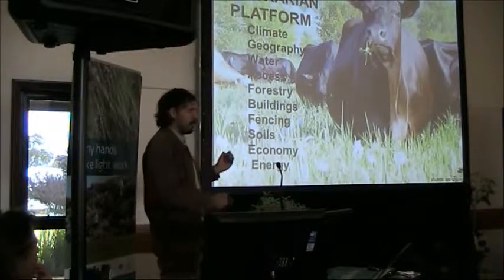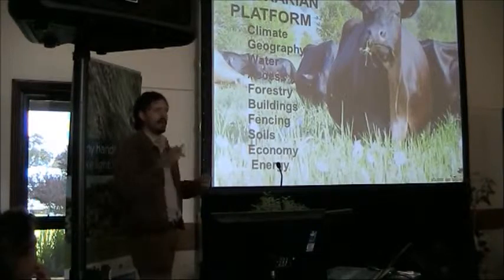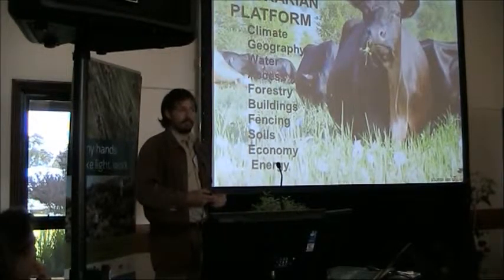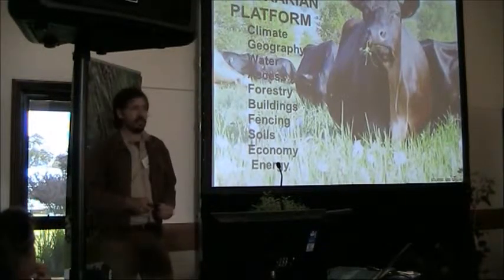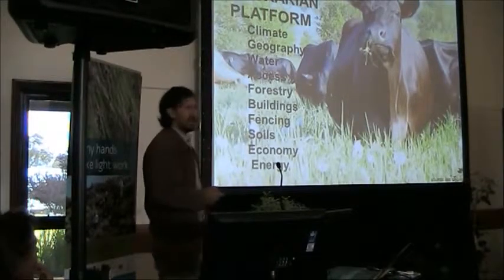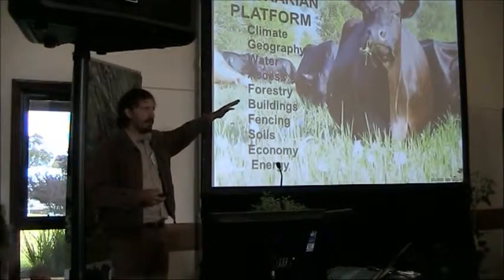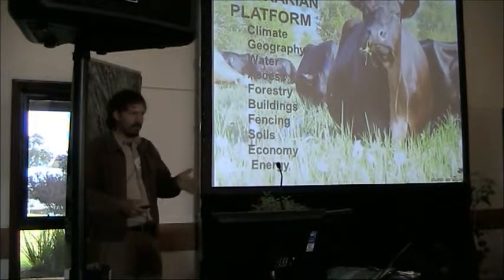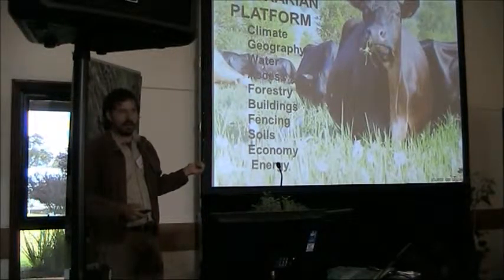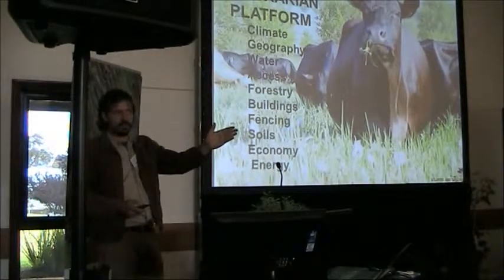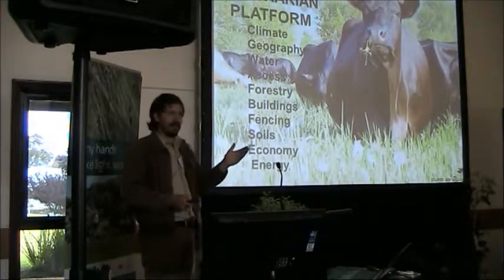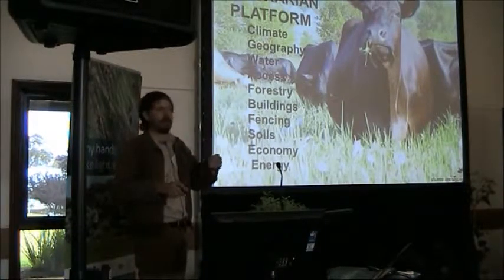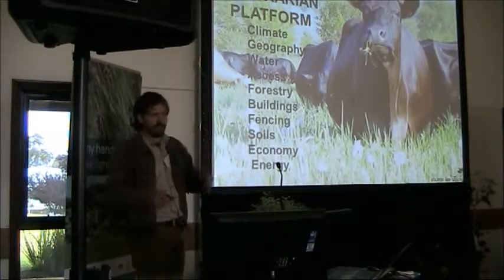Buildings cover the whole gamut of solar passive design, water harvesting on roofs, rainwater systems, and portable buildings. Fencing — whenever this part of the world was divided up a hundred or more years ago, it was quite arbitrary. The closest thing to a natural divide would be a river. Now we don't have to do that; we can use the landscape itself as a design template, looking at ridges, valleys, and waterways, and fence accordingly.